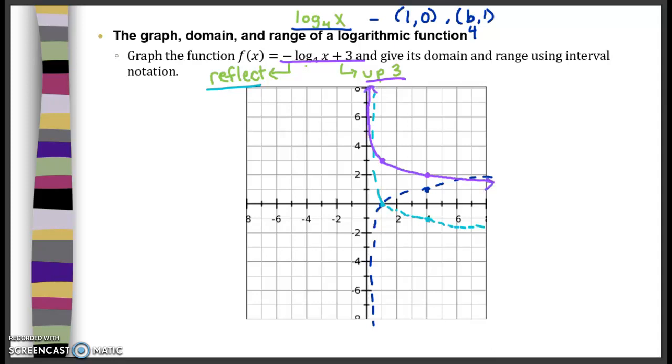Now, did anything shift to the left and right to affect my vertical asymptote? No. So I'm going to still have a vertical asymptote at x equals 0. So what is the domain and the range of this function?